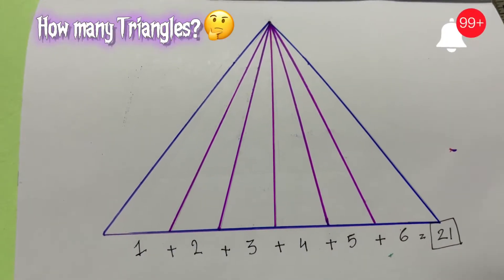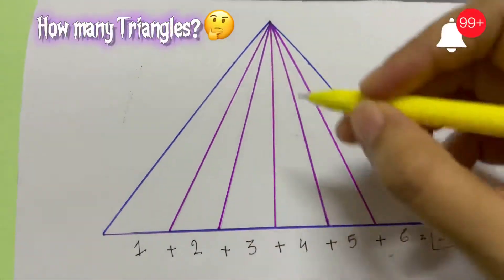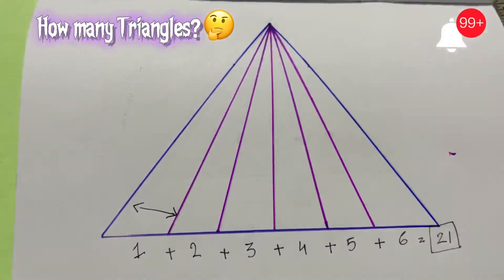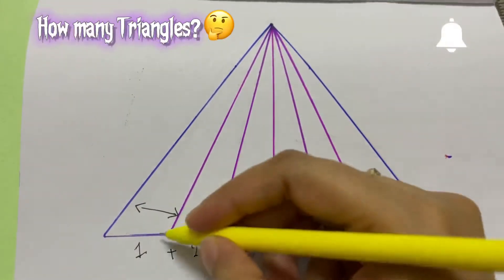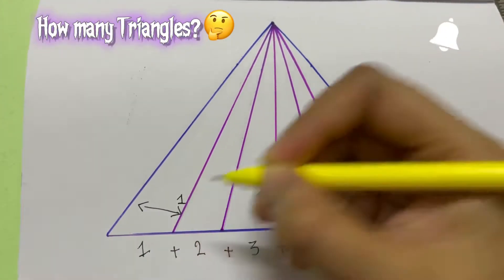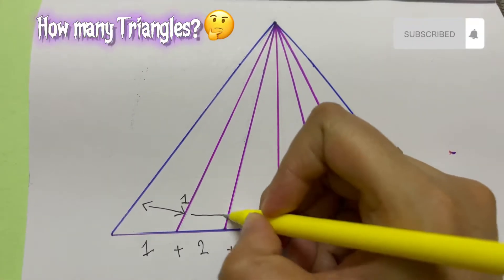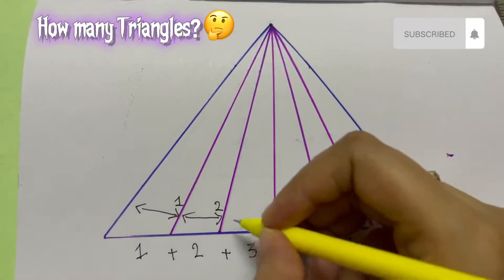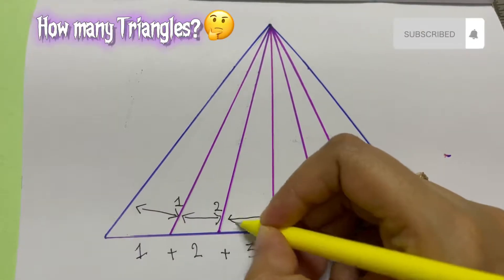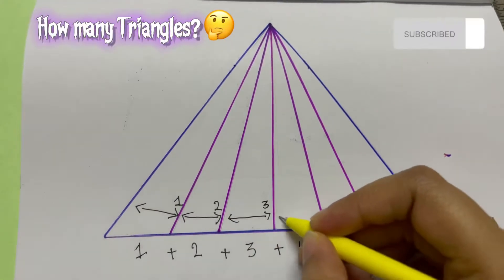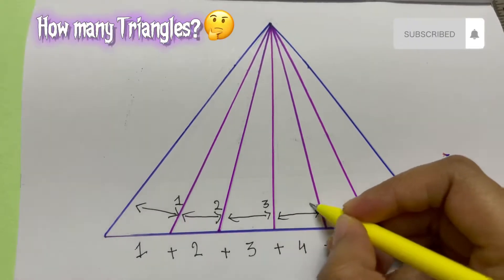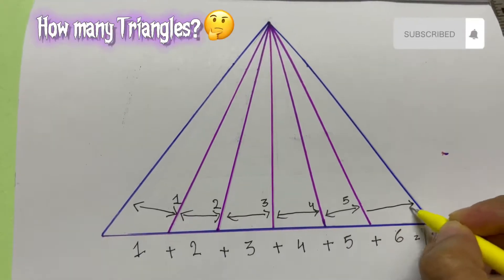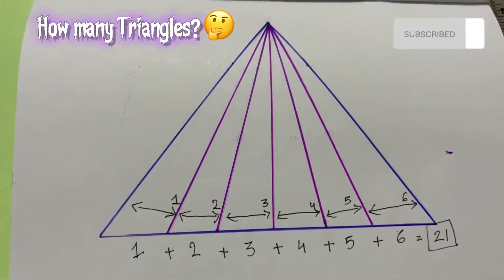Let's just start with the first triangle. I will just mark it down. This is my first triangle — this part. This is my second triangle. This is my third triangle. This is my fourth triangle. This is my fifth triangle. And this is my sixth triangle.